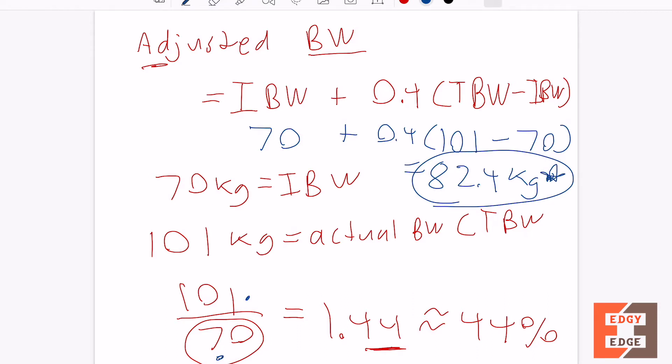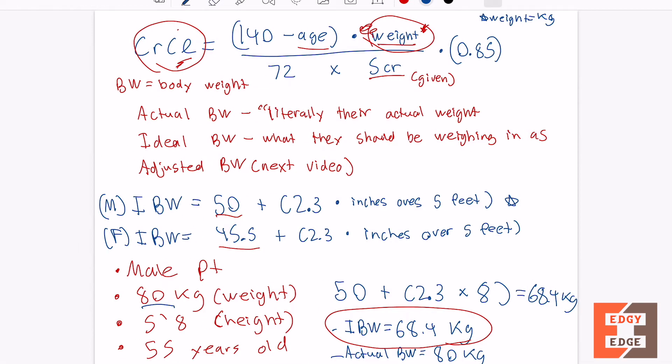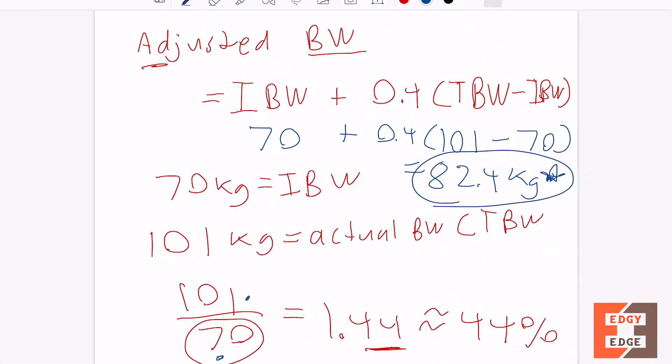So you use the adjusted body weight here. It's plain and simple. After you do this, then you plug that number into the weight here and then you do normal creatinine clearance which we talked about how to do previously, and you'll get an adjusted creatinine clearance for adjusted body weight formula.